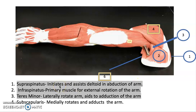To summarize the functions: supraspinatus initiates and assists the deltoid in abduction of the arm; infraspinatus is the primary muscle for external rotation of the arm; teres minor laterally rotates and aids in adduction of the arm; and subscapularis, on the anterior surface, medially rotates and adducts the arm. I hope you enjoyed and learned the subject we discussed. Feel free to click the subscribe button to be aware of the newest videos. Have a good day!